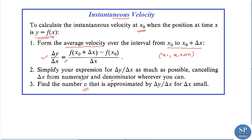First we find the average velocity, then the second step is to simplify this expression by cancelling Δx from numerator and denominator. Then we approximate the expression as Δx becomes small — that is, as Δx approaches 0. The approximate value of Δy/Δx at that limit is the instantaneous velocity, which can be denoted by v. So v is obtained by approximating Δy/Δx for Δx small.